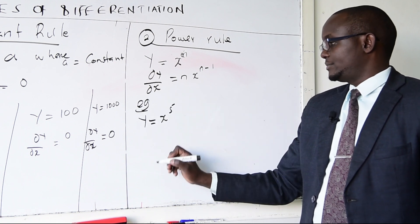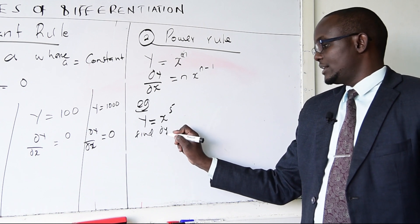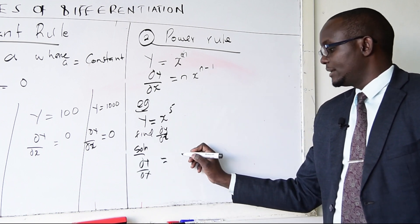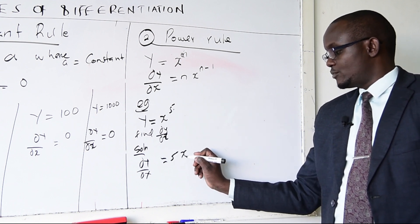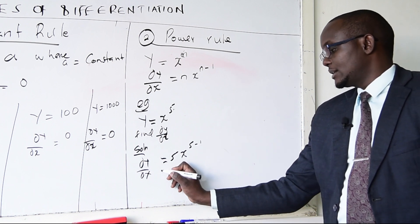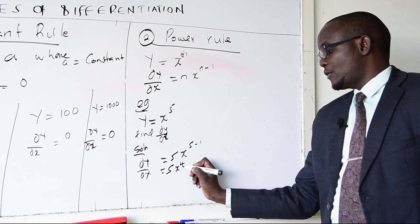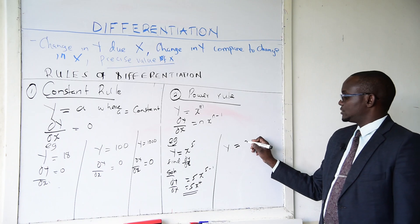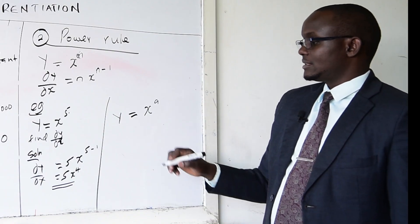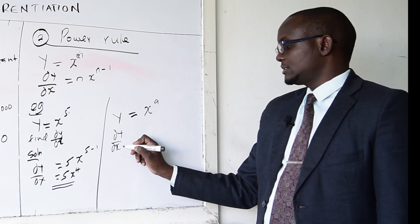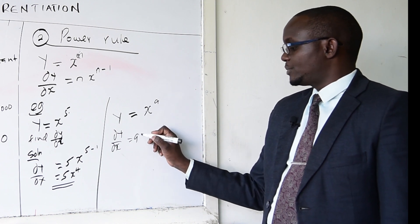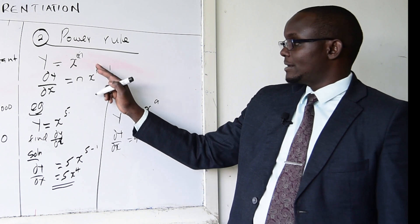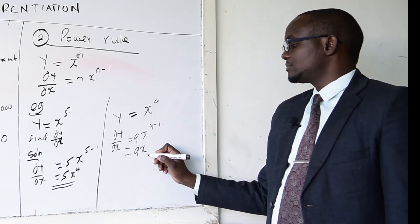Example: if y equals x^5 and you are asked to find dy/dx, the solution is simple. This 5 becomes a multiplier of x, so dy/dx equals 5x^4. Another example: y equals x^9, so dy/dx equals 9x^8. Here 9 is our n, just as 5 was our n in the previous example.